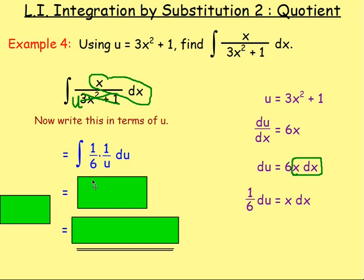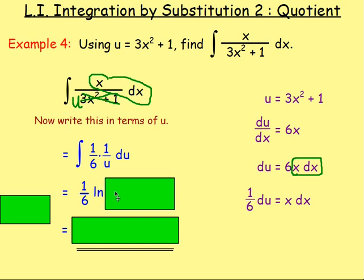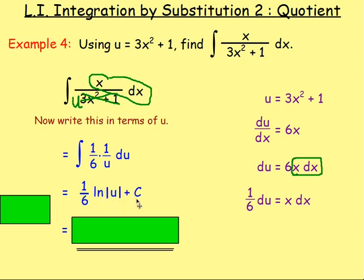So we are integrating 1/6 times 1 over u du. The 1/6 will just stay as 1/6 — that is not going to change. And 1 over u, if you integrate it — you're going to have ln|u|. You need to remember the modulus sign when you bring in ln. So we're going to have 1/6 ln|u| plus c.